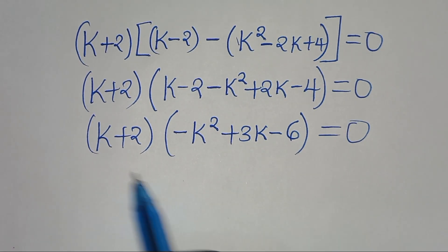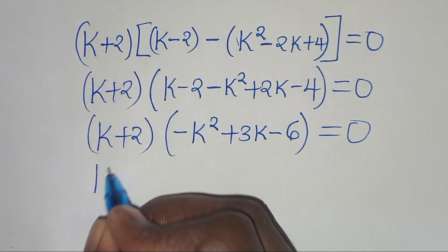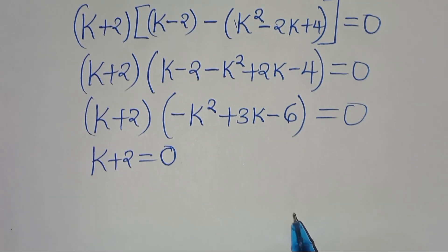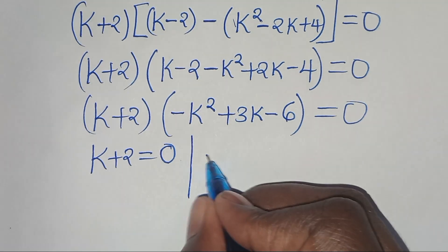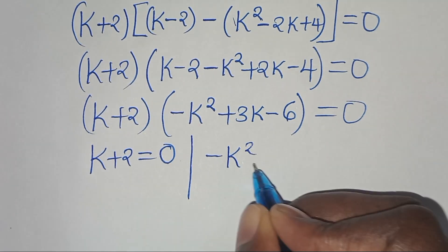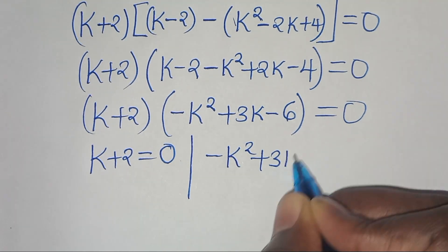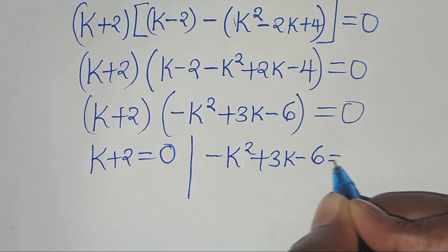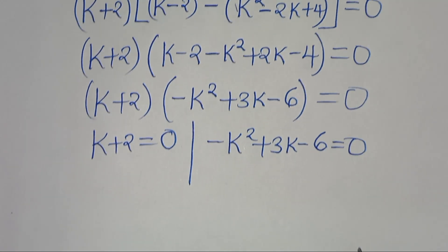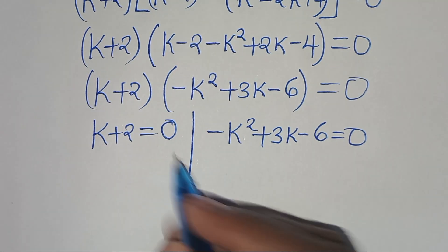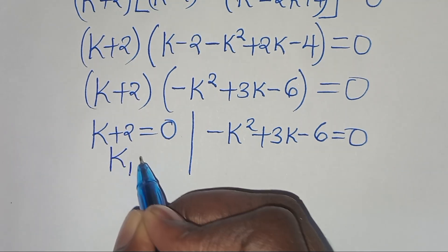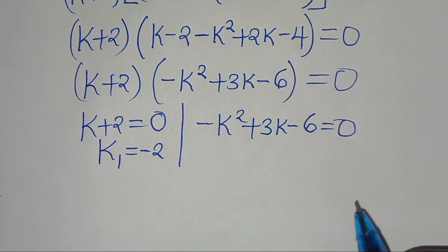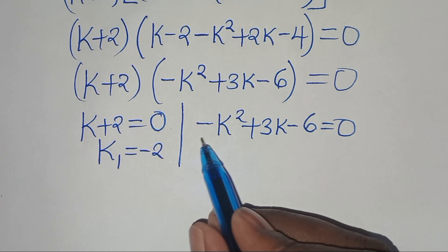We now have two parts: the first part gives k + 2 = 0, and the second part gives minus k squared plus 3k minus 6 = 0. From the first part, k₁ equals minus 2.